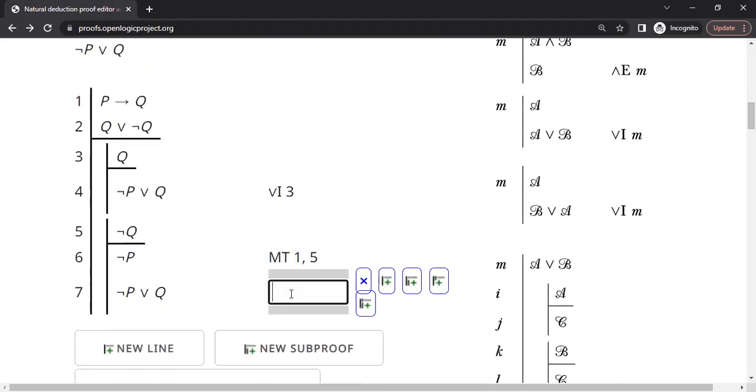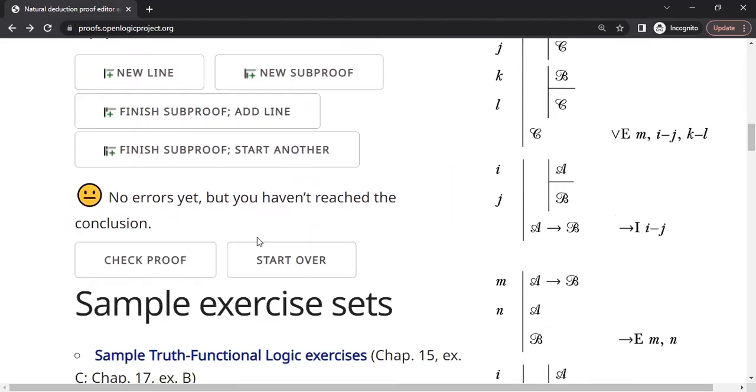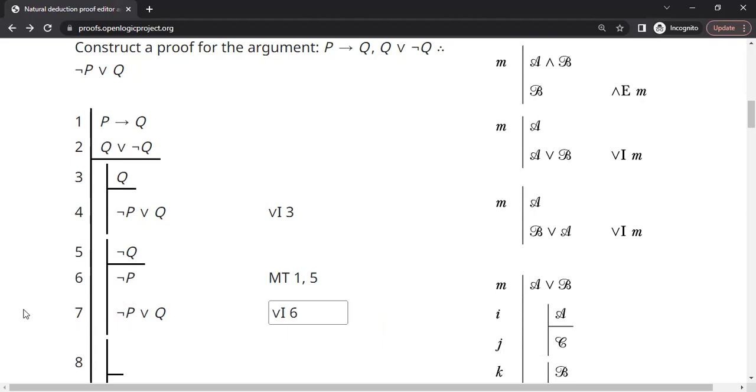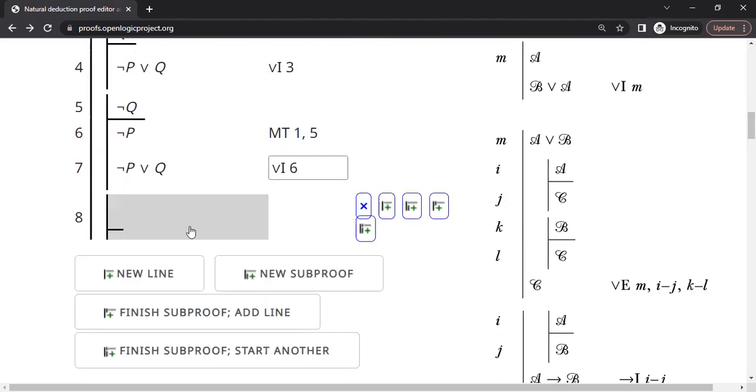Q because of OR introduction to line number 6. Okay. Now we can check the proof. Yeah. No errors. We can go ahead and conclude the proof OR introduction to line number 6. Okay. All right.